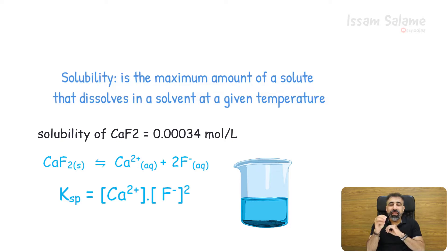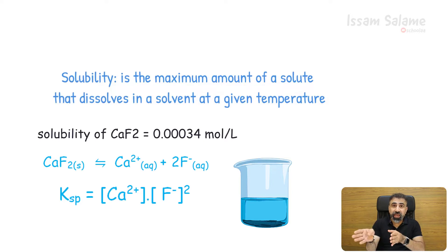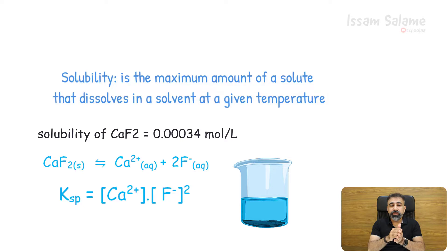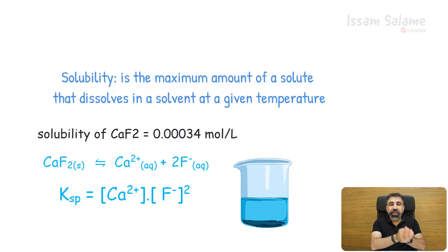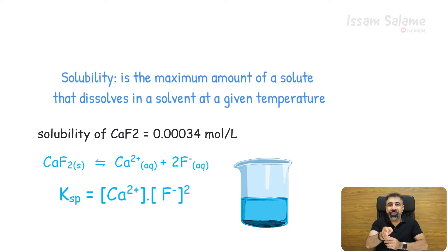In this video I will practice four different types of questions that can be asked about the solubility product constant. The first one — and the easiest — is how to find the Ksp from the concentration of the ions in a solution. Let's look at this question.